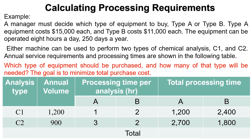Then calculate the total processing time for each machine. For machine A, it is 1,200 plus 2,700, equal to 3,900. For machine B, it is 2,400 plus 1,800, equal to 4,200.